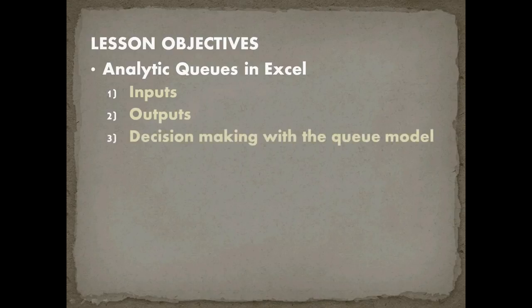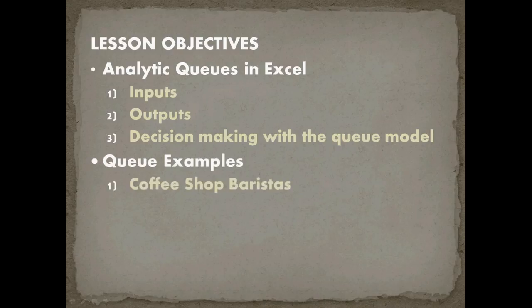We're going to do this by looking at two examples. The first is going to be how many baristas a coffee shop should have — this is a very traditional queue analysis. And then we're going to look at a new car wash, so whether or not a business should recapitalize and incur a higher service cost, which is also a fairly common form of queue analysis.